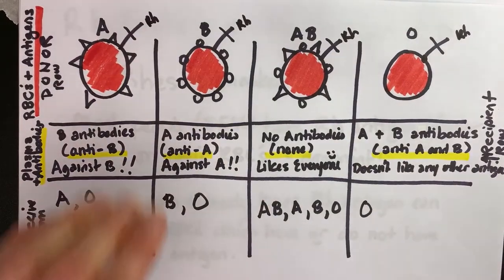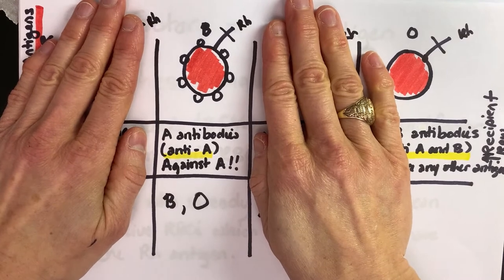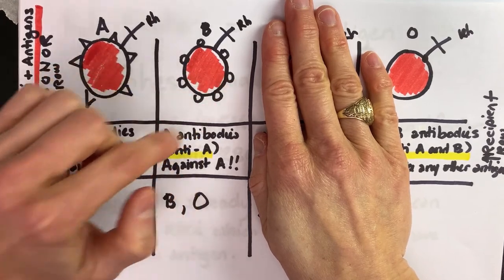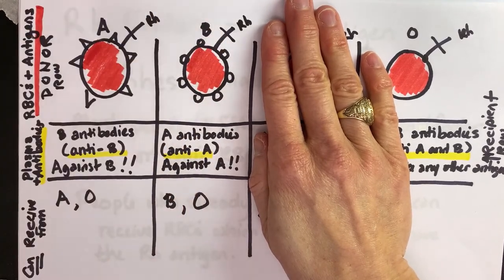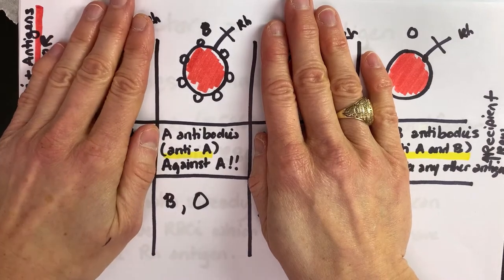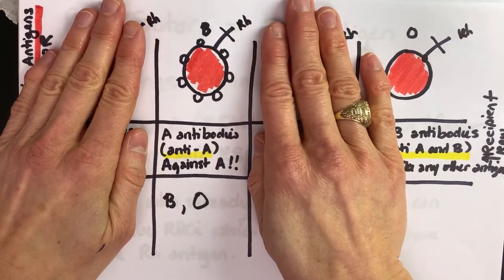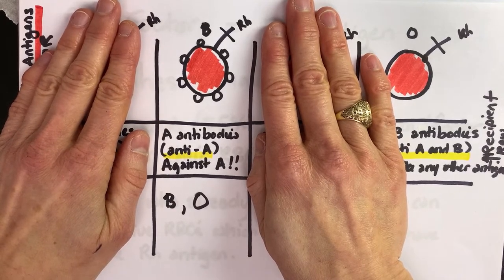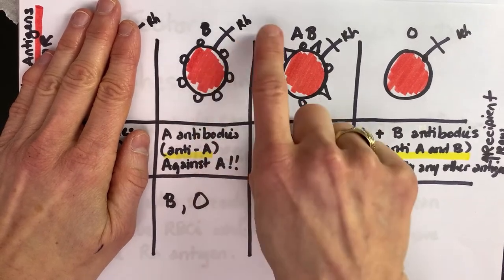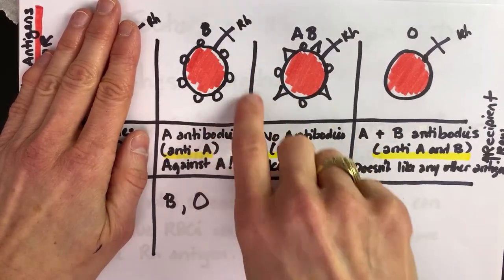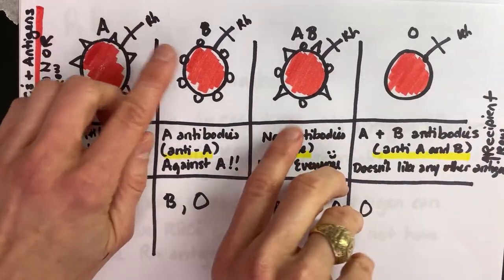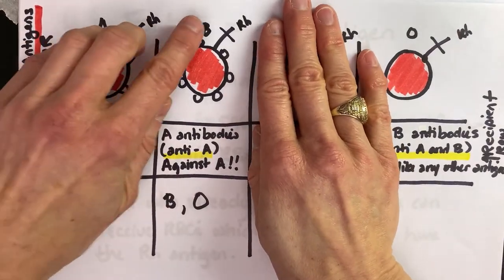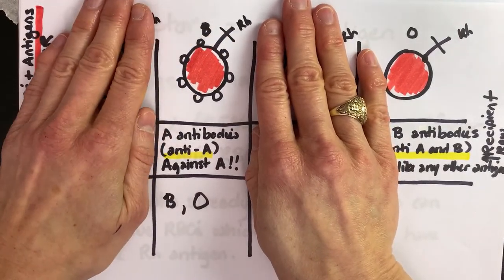So now this person has Rh. We've taken into account whether or not they could receive blood based on these other antigens, on these B antigens, but we need to factor in, can they match someone with Rh? So now we're looking at what's called positive for Rh versus negative for Rh. I want you to see that it is attached to the red blood cell. It is a thing, just like these B antigens are on the cell membrane. This has an Rh antigen stuck into the cell membrane.